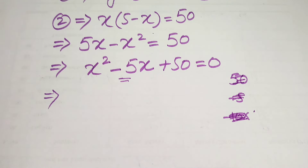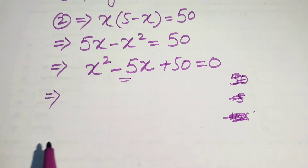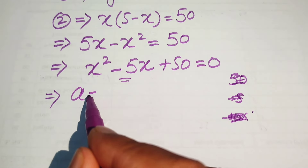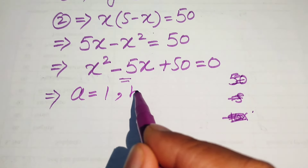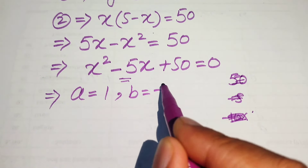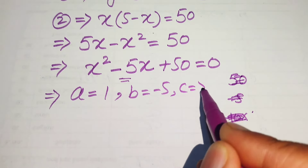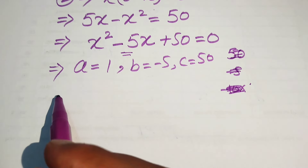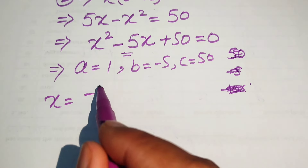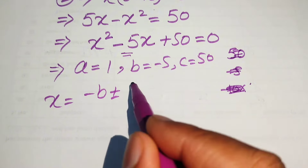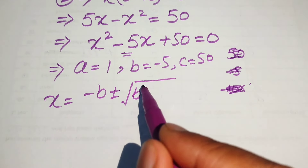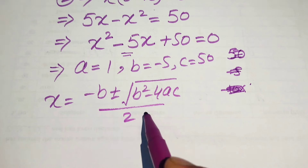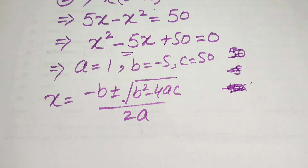Here we solve the problem using the quadratic formula. First we write the coefficients of this equation: a equals 1, b equals minus 5, and c equals 50. The quadratic formula is x equals minus b plus or minus square root of b squared minus 4ac, all divided by 2a.